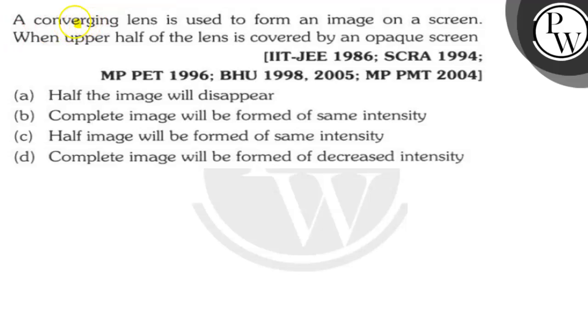Let's read the question. The question is: a converging lens is used to form an image on a screen. When the upper half of the lens is covered by an opaque screen, which option is correct?